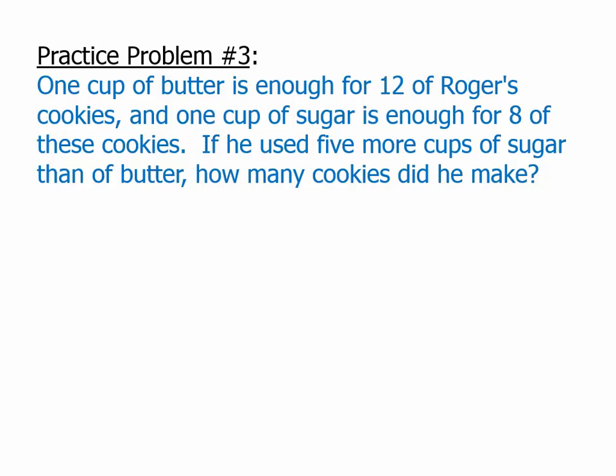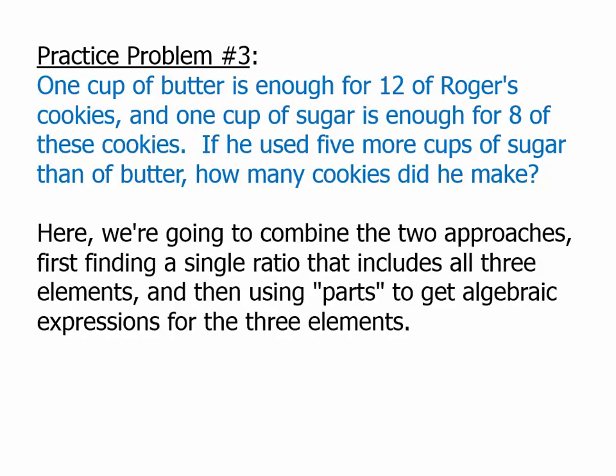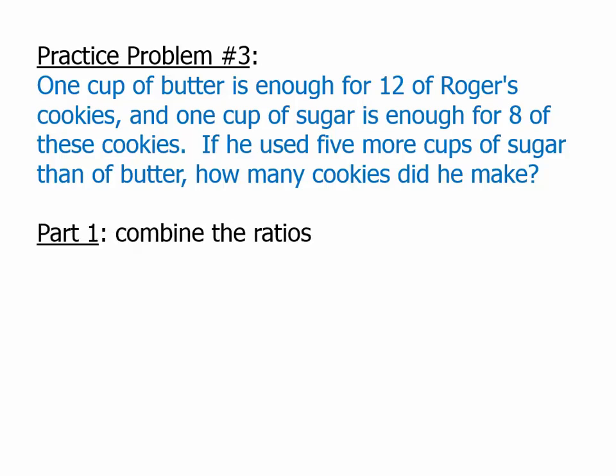So, first, we're going to have to come up with the ratio, the combined ratio for the whole thing. So, we're going to start out. So, here, we're going to use both strategies. First, we're going to combine the ratios. So, these are the separate ratios. Butter to cookies, 1 to 12. Sugar to cookies, 1 to 8. The common factor here are the cookies.